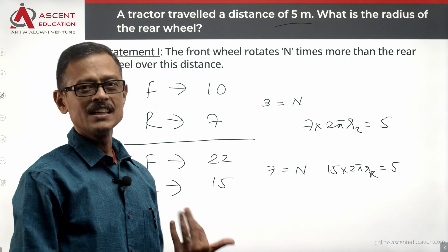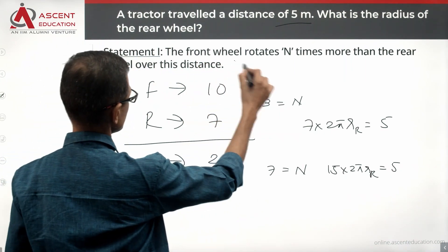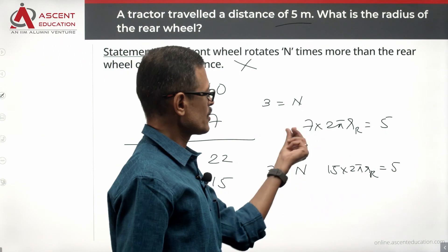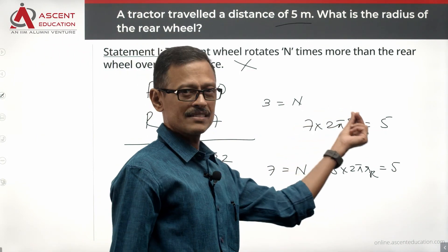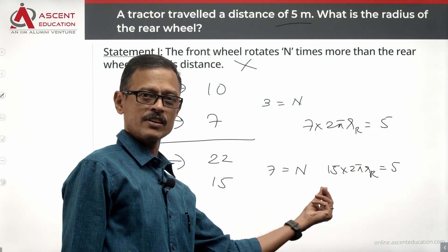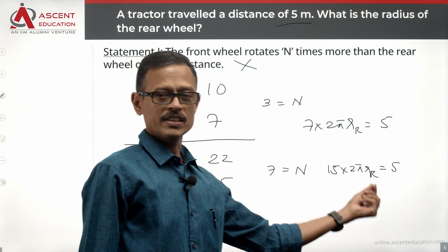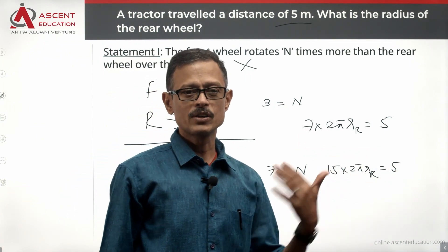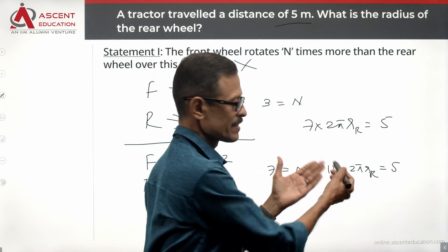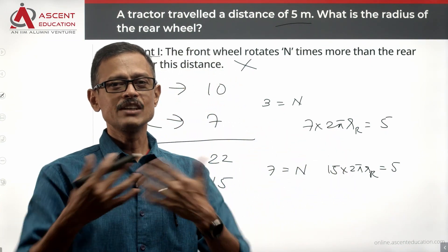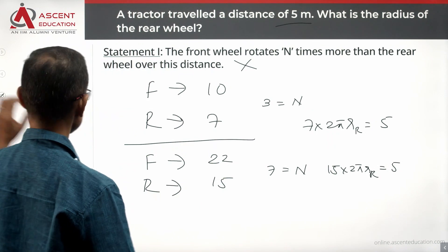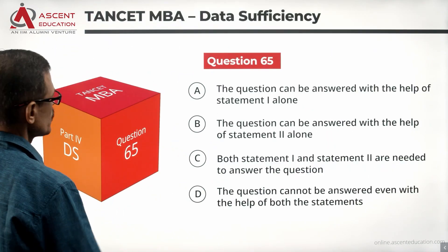So Statement 1 is not giving us a conclusive answer. It could be 7 rotations and the circumference of the rear wheel equals 5 meters, or it could be 15 rotations and the circumference of the rear wheel equals 5 meters. You can take infinite possibilities. So Statement 1 alone is not sufficient.